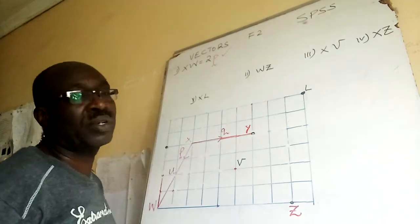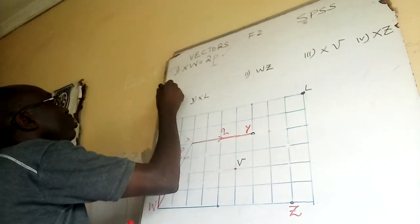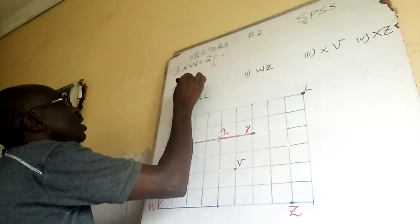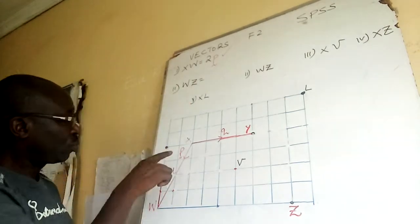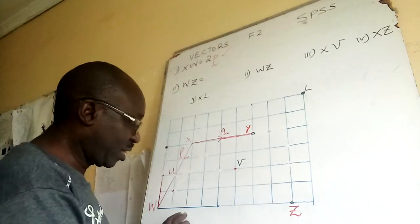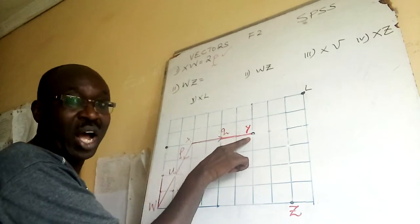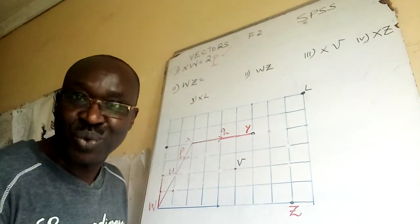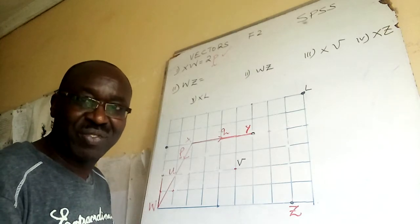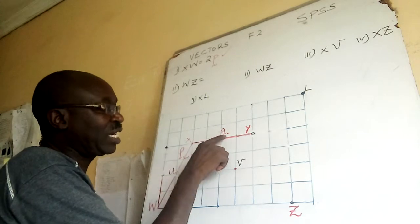Now I look for WZ. Number two, we are looking for WZ — from W up to Z. There is nothing directly given. The information we have is from X to Y is Q. Again, I'm testing equivalent vectors, so I look at this vector Q.